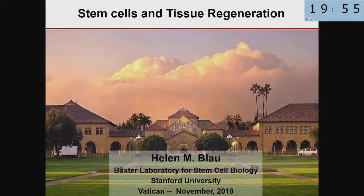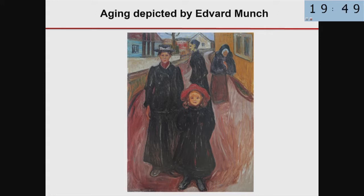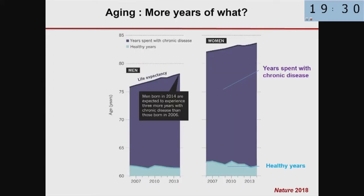This talk is going to be more down-to-earth about stem cells and regeneration. Aging is often depicted, as shown here by Edvard Munch, as a relentless progression from a wondrous child to a full-grown woman to middle age and then decrepit aging. We know that our longevity is increasing — both men and women are living longer — but the quality of life, the health span, is not increasing. As posed in Nature this year, we have more years, but years spent with chronic disease.